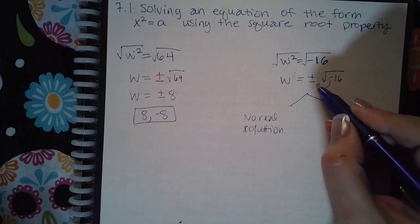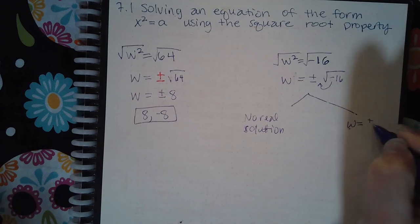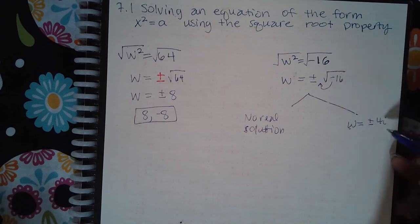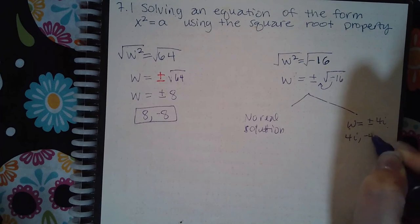say, taking this out as an i, w equals ±4i because the square root of 16 is 4 and the square root of -1 is i, giving you the two answers 4i and -4i.